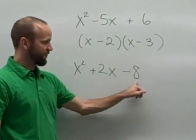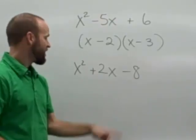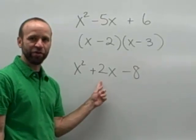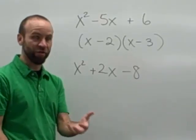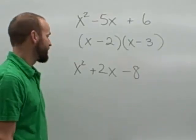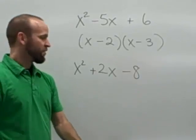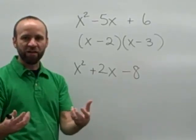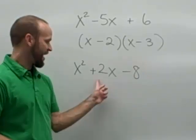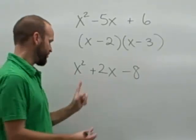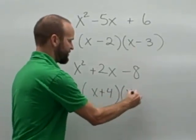On this one, I'm looking for factor pairs of negative 8, which means one positive and one negative. I want the sum to be positive 2, which means I want the positive factor to be larger than the negative factor. So if we're looking at factors of negative 8, it's either got to be 8 times negative 1, or 4 times negative 2. Since 4 and negative 2 add up to positive 2, those are the factors I want. This would be x plus 4, x minus 2.